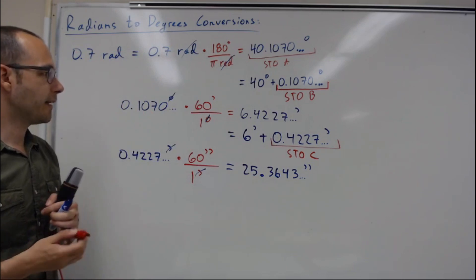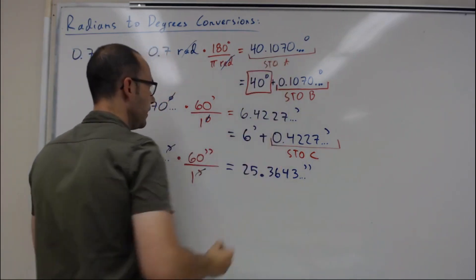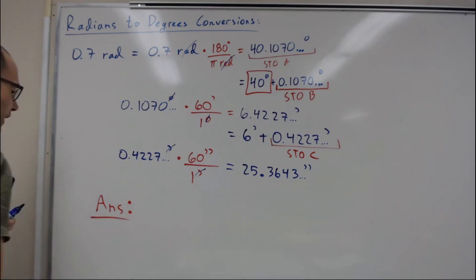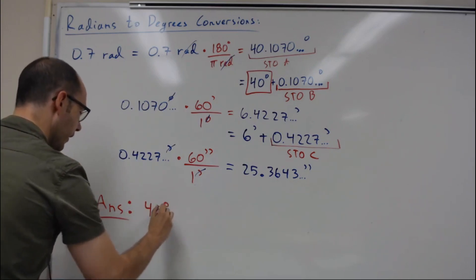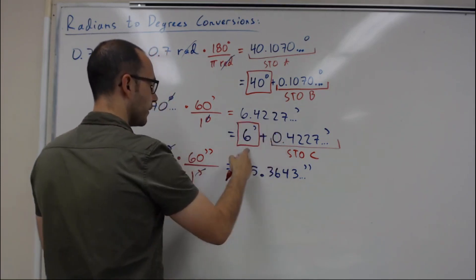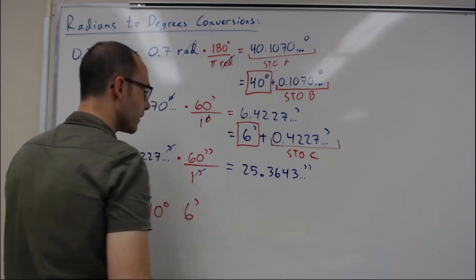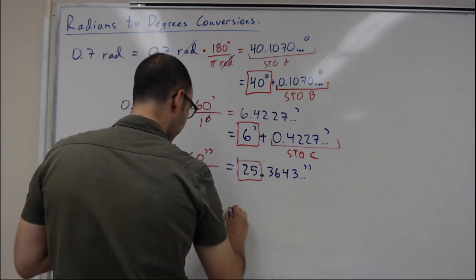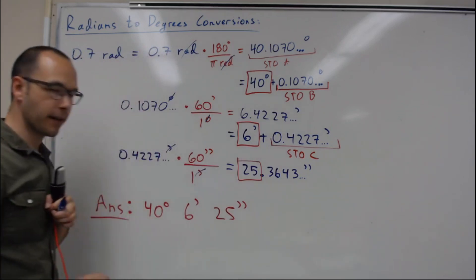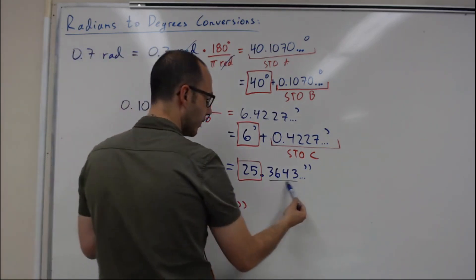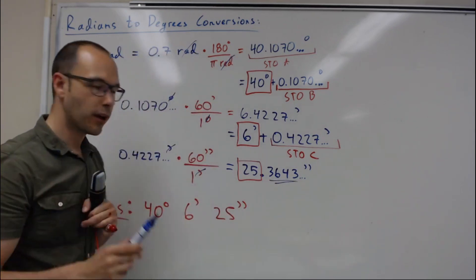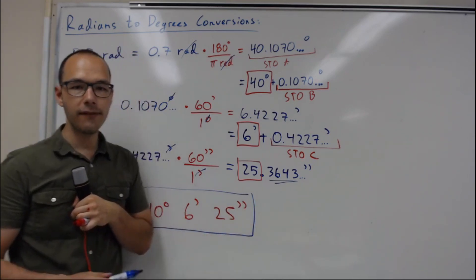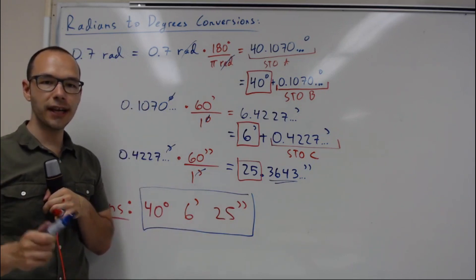Now we can write our final answer: the whole number of degrees is 40 degrees, the whole part of minutes is 6 minutes, and the whole part of seconds is 25 seconds. Sometimes they will ask for a few decimals, but usually you stop here. The final answer is 40 degrees, 6 minutes, and 25 seconds. Thanks for watching and see you at the quiz.